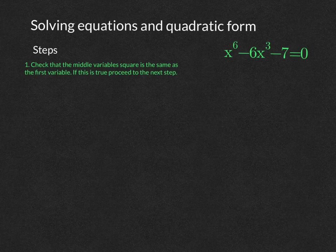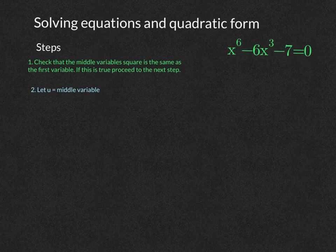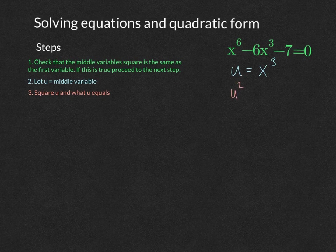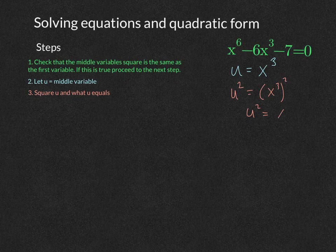Step two is to let u equal that middle variable, so u equals x cubed. Step three is to square u and square what u equals. That means u squared equals x to the sixth, which should be the first term, and u itself is the middle term.